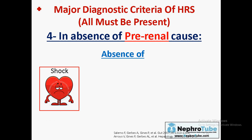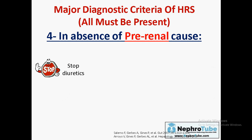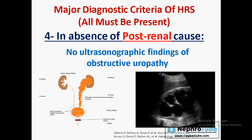To exclude pre-renal causes: rule out shock, sepsis, and volume depletion. Most of these patients look volume-depleted, so perform a therapeutic test: stop diuretics and give albumin 1 gram per kg body weight per day up to 100 g maximum. If there is no sustained improvement in renal function, it is hepatorenal syndrome. If renal function improves, it was a pre-renal cause. To exclude post-renal causes: use ultrasonography — if there is no hydronephrosis or signs of obstruction, it is not a post-renal cause.